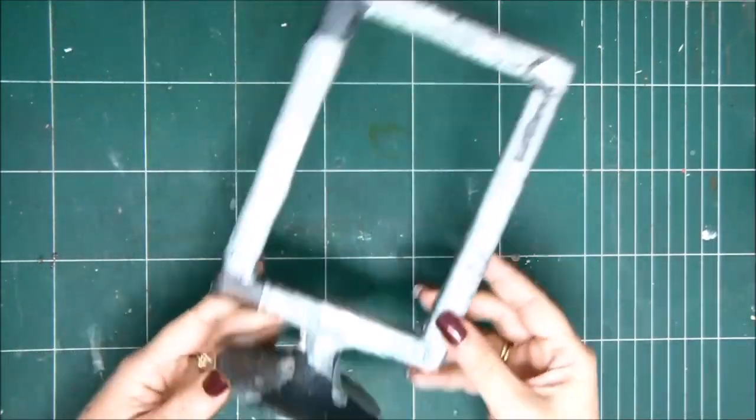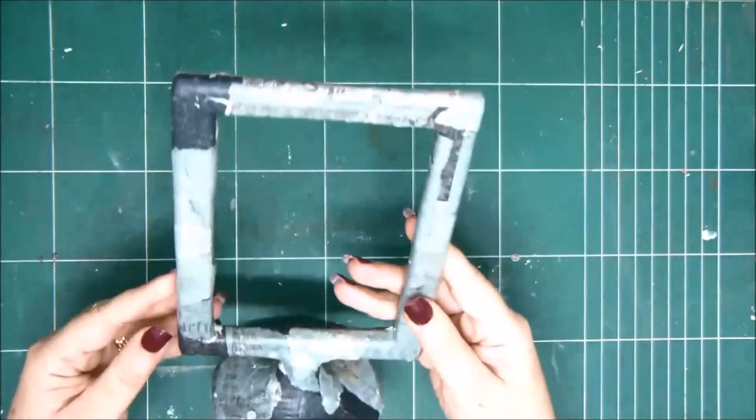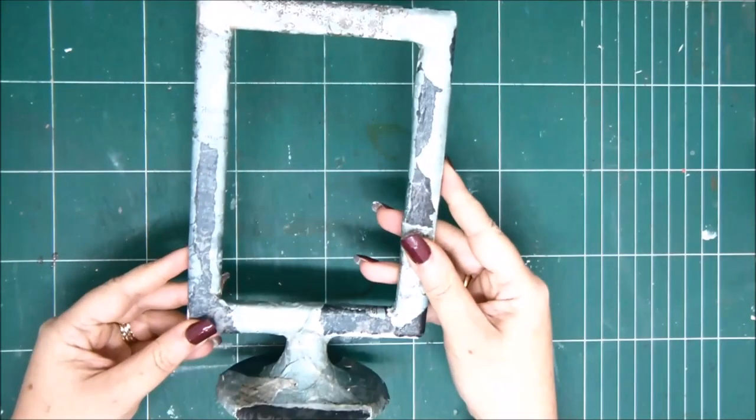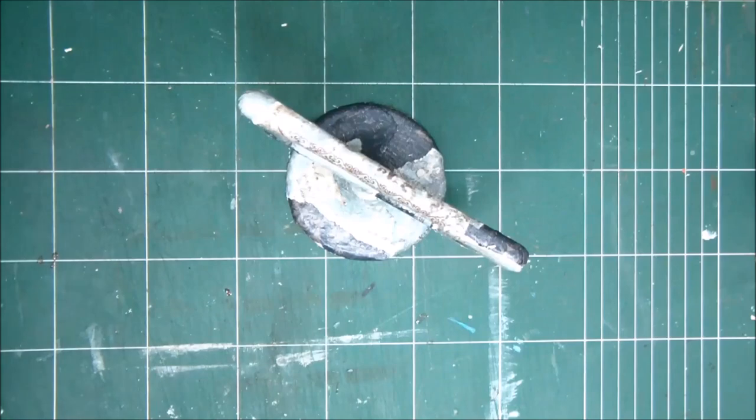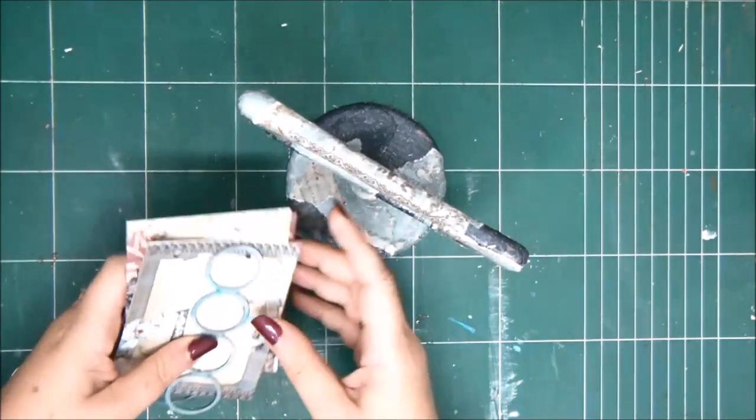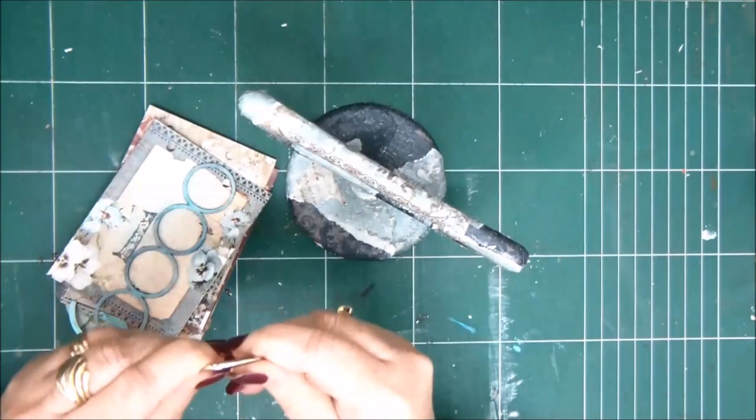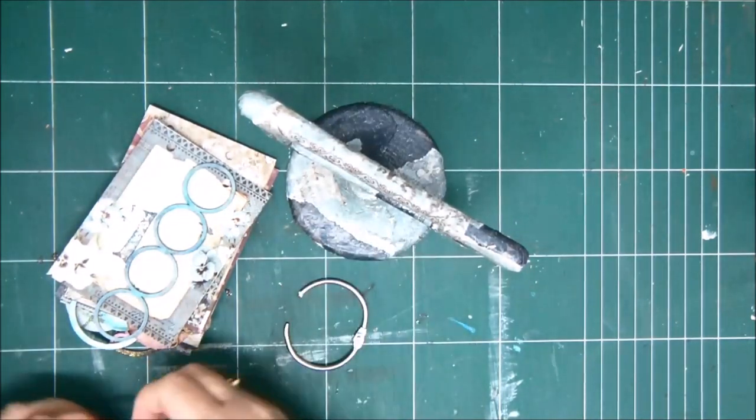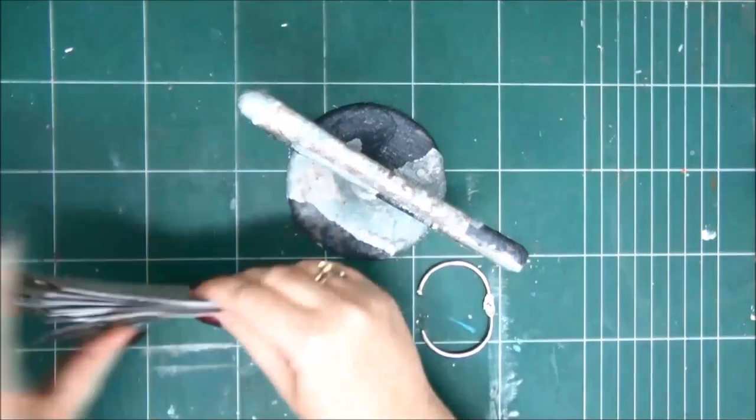And this is how the frame looks after it's covered. You don't see any white plastic anymore. So for this particular frame I've added some pages with rings hanging them on the frame. You can add whatever you want of course.